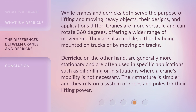While cranes and derricks both serve the purpose of lifting and moving heavy objects, their designs and applications differ. Cranes are more versatile and can rotate 360 degrees, offering a wider range of movement, and are also mobile — either mounted on trucks or moving on tracks. Derricks, on the other hand, are generally more stationary and are often used in specific applications such as oil drilling or in situations where a crane's mobility is not necessary. Their structure is simpler, relying on a system of ropes and poles for lifting power.